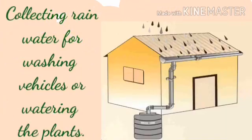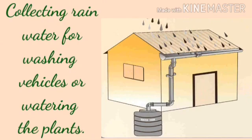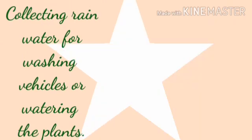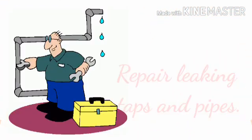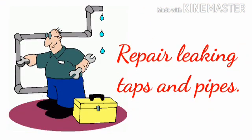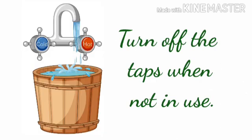Number 4: Collect rain water for washing vehicles or watering the plants. Number 5: Repair leaking taps and pipes. And last: turn off the tap when not in use.